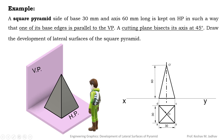In the front view, slant edges OA and OD coincide on one side. Before drawing the development of lateral surfaces, we must first draw the front view and top view for the given pyramid. For a pyramid, the vertical faces are triangular in shape. In the front view, points A and D coincide, giving A'D', and points B and C coincide, giving B'C'.